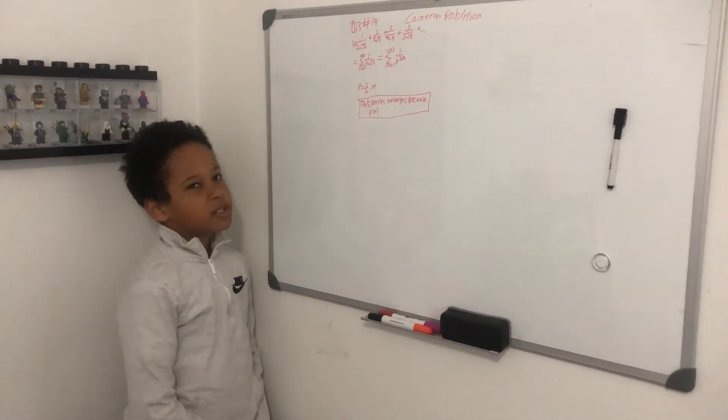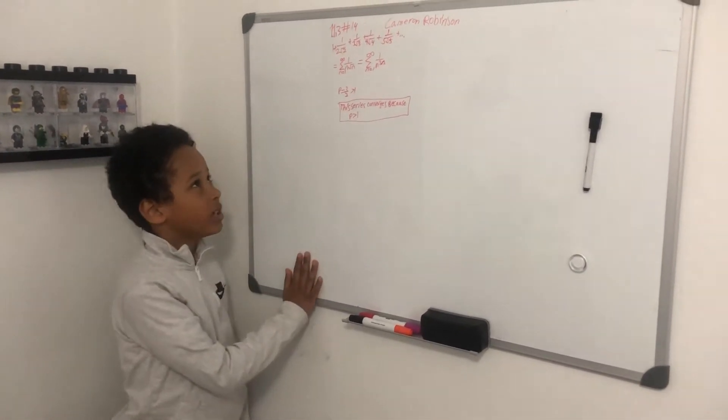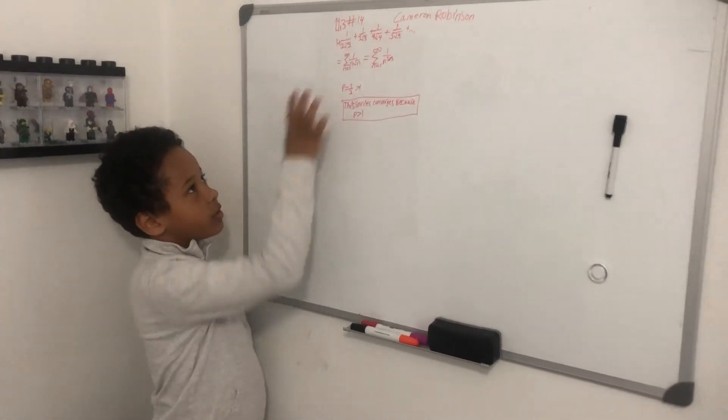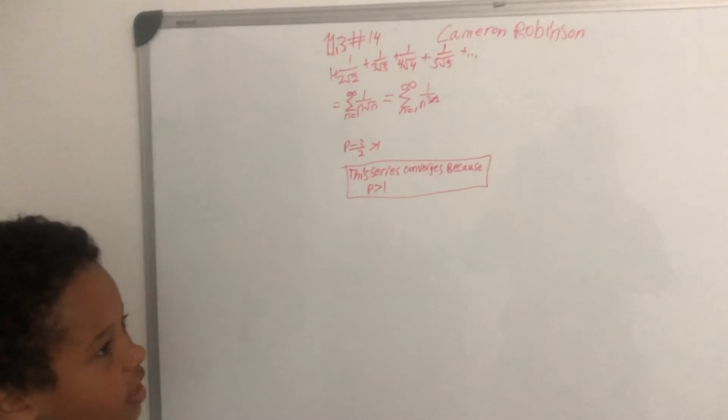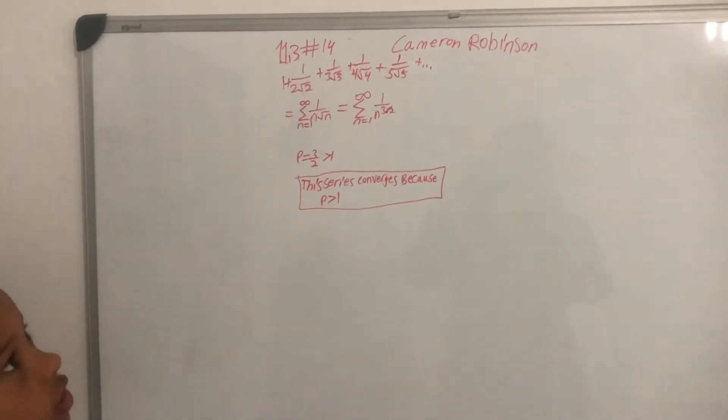My name is Cameron Robinson and this problem is 11.3 number 14. This is the series and the book is asking us to find whether the series is convergent or divergent.